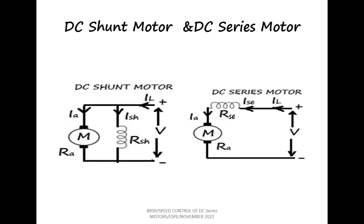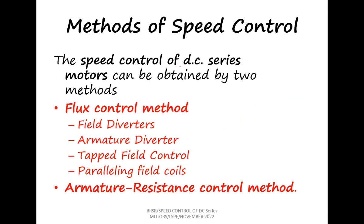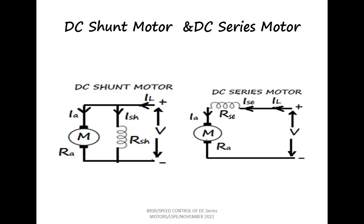In the case of the series motor, we also have two methods. One is called the flux control method or field control method, wherein only the field current is changed. The other method is the armature control method, where only the armature current is changed. To change the field current alone without disturbing the armature current, we have four methods: field diverter, armature diverter, tapped field control, and paralleling of field coils. These four methods change only the field current without changing the armature current.